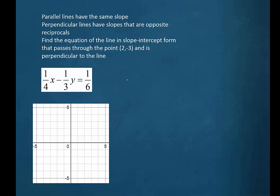Parallel lines have the same slope. Perpendicular lines have slopes that are opposite reciprocals. We are to find the equation of the line in slope intercept form that passes through the point and is perpendicular to the line one fourth x minus one third y equals one sixth.